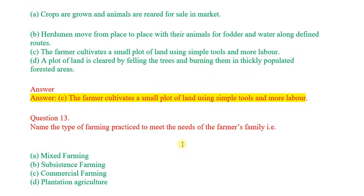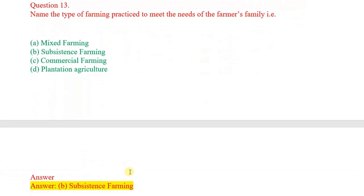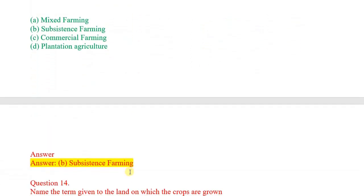13th question: Name the type of farming practice to meet the needs of the farmer's family. Options: mixed farming, subsistence farming, commercial farming, plantation agriculture. Correct answer: subsistence farming.